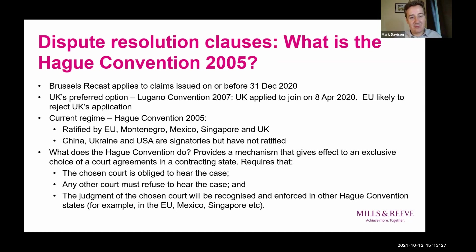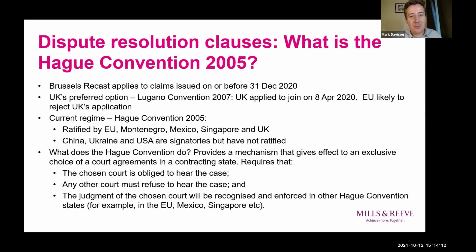Looking briefly at the history of the Hague Convention: the idea originated in the 1990s as a project to create a worldwide model reflecting what was in place under the Brussels and Lugano regimes. It was hoped it would become the court equivalent of the New York Convention 1958, which deals with reciprocal enforcement of arbitration awards and now has over 160 signatory states. It became apparent it was too difficult to get states to sign up to something of that magnitude, so it was scaled down to what we now see in the 2005 convention — choice of court agreements in commercial cases and enforcement of judgments of the designated courts.